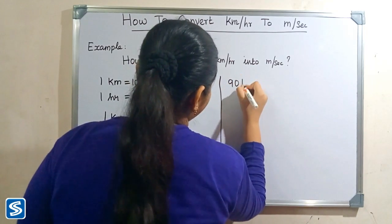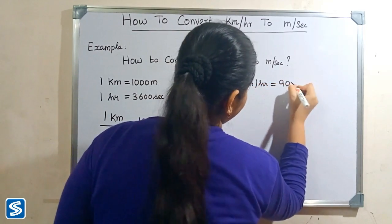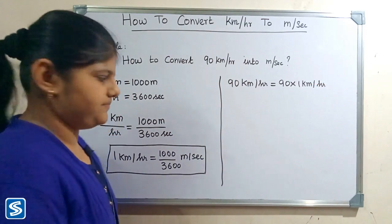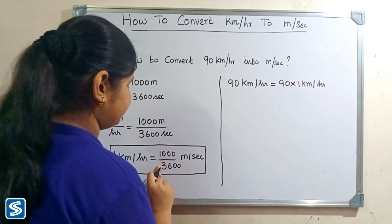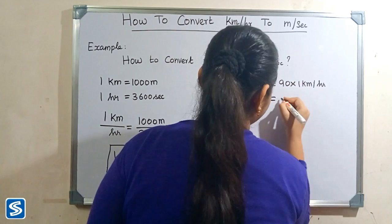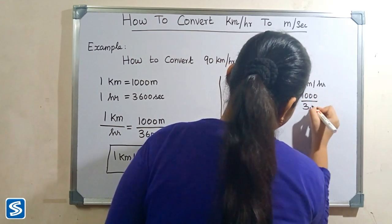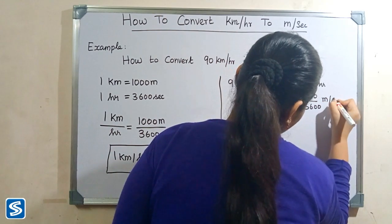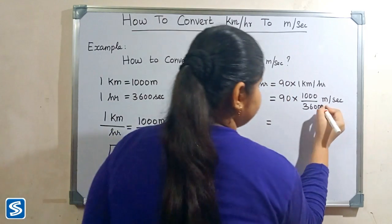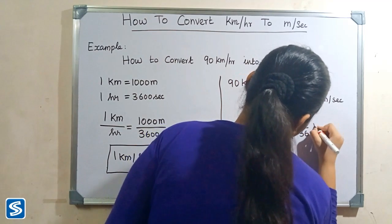So 90 kilometer per hour is equal to 90 multiplied by 1 kilometer per hour. We substitute 1000 by 3600 meters per second in place of 1 kilometer per hour, giving us 90 multiplied by 1000 by 3600 meter per second, which simplifies to 90 multiplied by 10 by 36 meter per second.